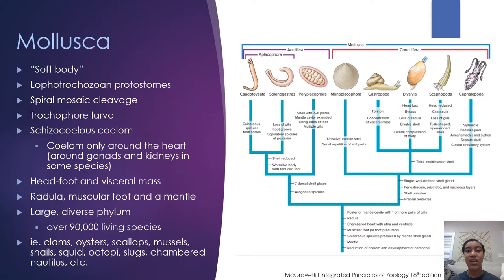Mollusks are actually only second to arthropods in diversity, making them a major group. Some mollusks you're probably familiar with are clams, oysters, scallops, mussels, snails, squid, octopi, slugs, and chambered nautiluses — the list keeps going. Most of these you probably recognize as food, but some maybe not so much.